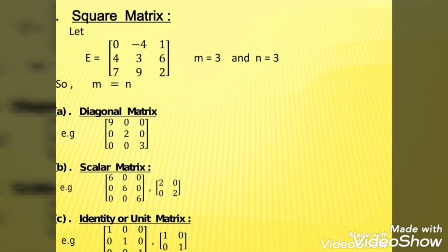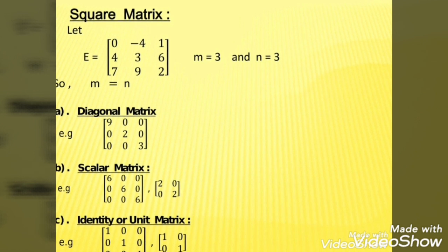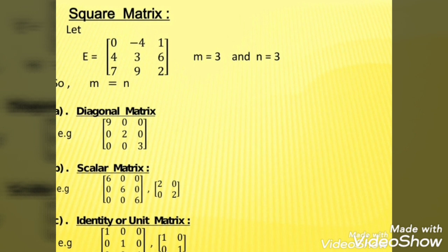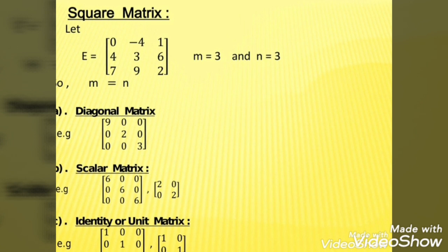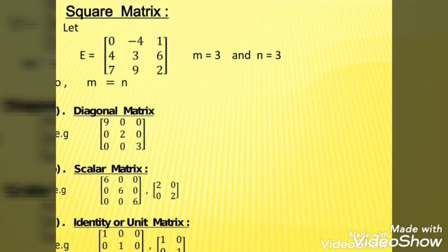Another type is square matrix. Consider matrix E. In matrix E, you can see that there are 3 rows and 3 columns, so the order is 3 by 3. M equals 3 represents the number of rows, and N equals 3 represents the number of columns. Since the number of rows equals the number of columns, that matrix is a square matrix.